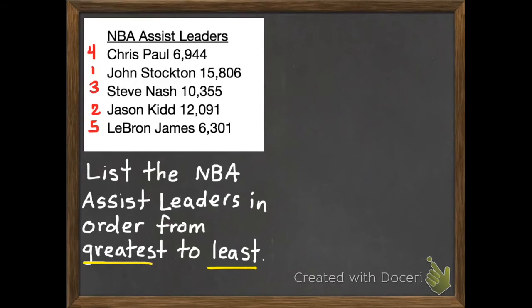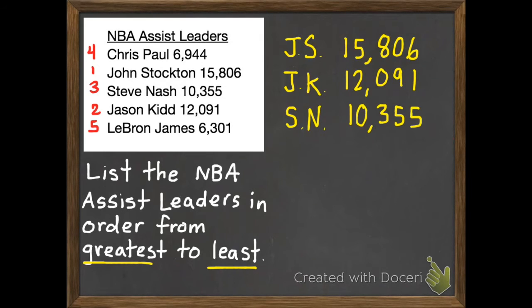So I'm going to write these in order, because my instructions were to list the NBA Assist leaders in order from greatest to least. It's always important to make sure we know if it's greatest to least or least to greatest. We don't want to accidentally write it backwards and get it wrong. So I'm going to abbreviate John Stockton as JS, because I don't have a lot of room here. So John Stockton was the greatest at 15,806. Second, Jason Kidd with 12,091. Steve Nash, 10,355. Chris Paul currently has 6,944. And LeBron James has 6,301. That's the end of my first example.